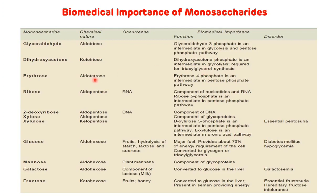Dihydroxyacetone is also required for the synthesis of triacylglycerol. Third, erythrose — it is an example of aldo-tetrose and is present as an intermediate in the pentose phosphate pathway in the form of erythrose 4-phosphate. Fourth, ribose — it is an example of aldo-pentose, is an important component of nucleotides and RNA, and is also present as an intermediate in the pentose phosphate pathway. Another one is 2-deoxyribose — it is also an aldo-pentose and is an important component of DNA.